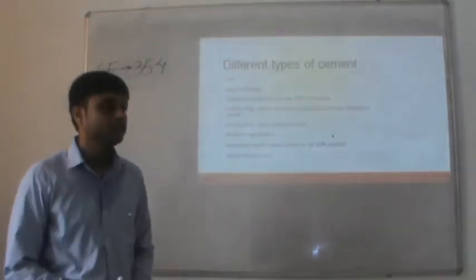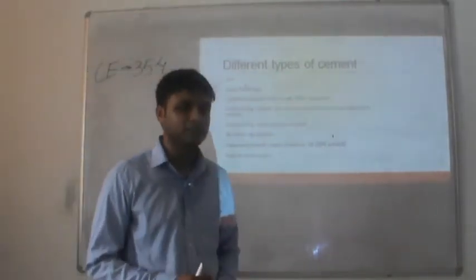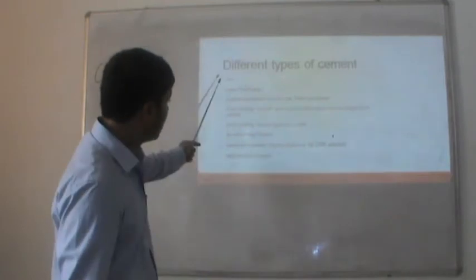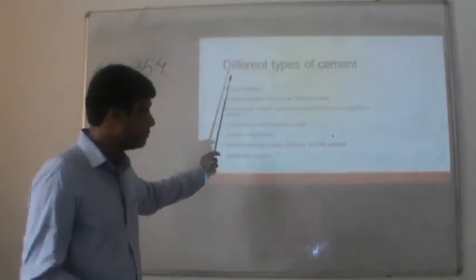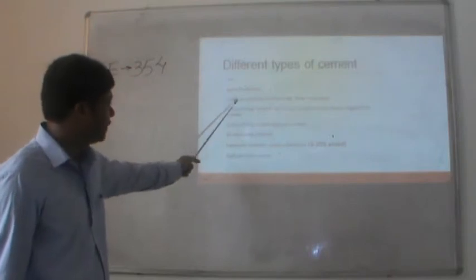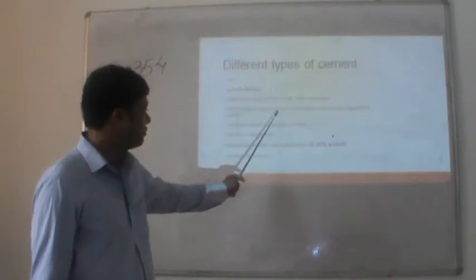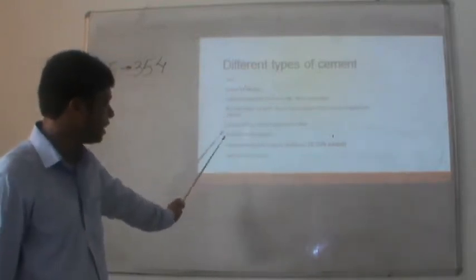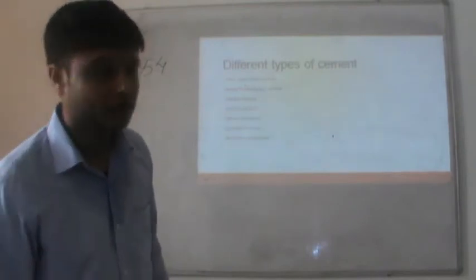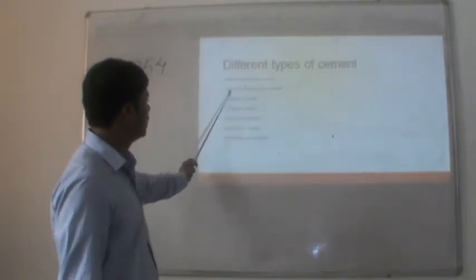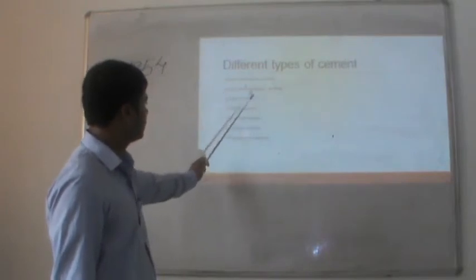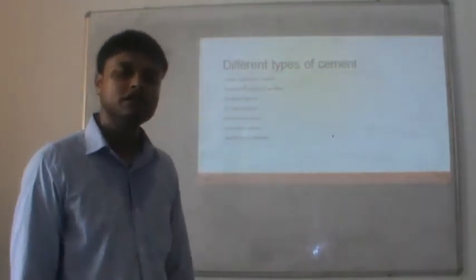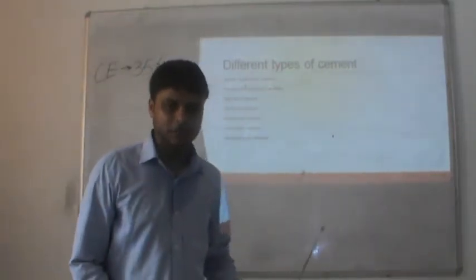There are other different types of cement given by Indian standard codes: Ordinary Portland Cement (OPC), Rapid Hardening Cement, Sulfate Resistant Cement, Quick Setting Cement, Expansive Cement, High Alumina Cement, Super Sulfated Cement, Pozzolana Cement, Colored Cement, and Hydrophobic Cement. We will study these one by one.